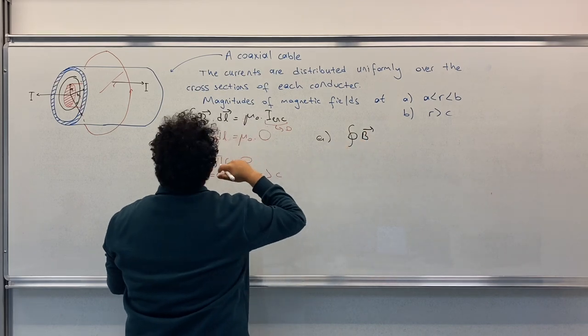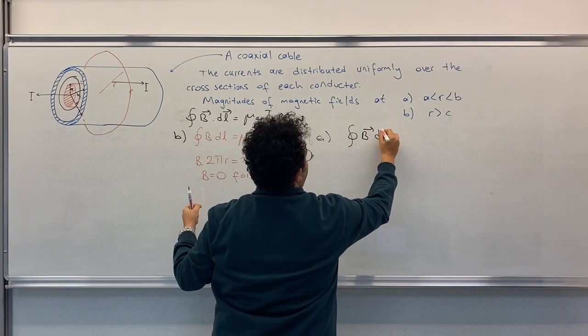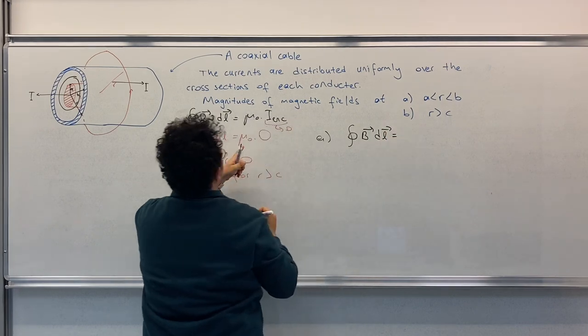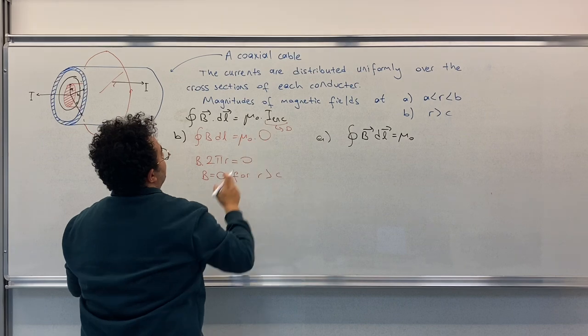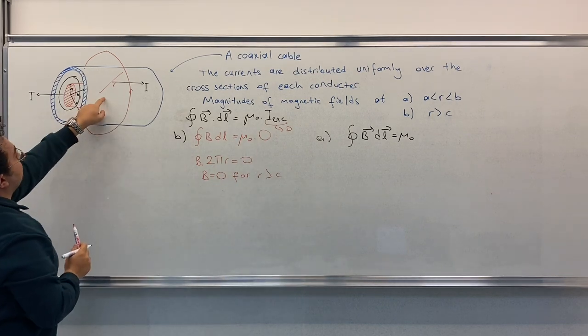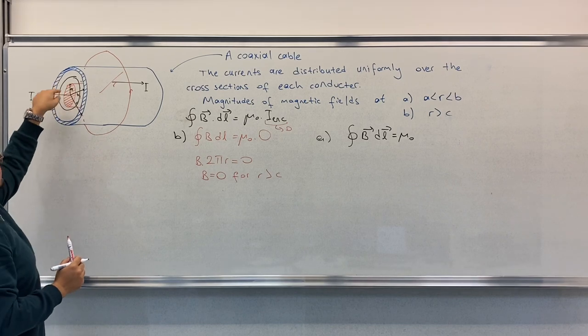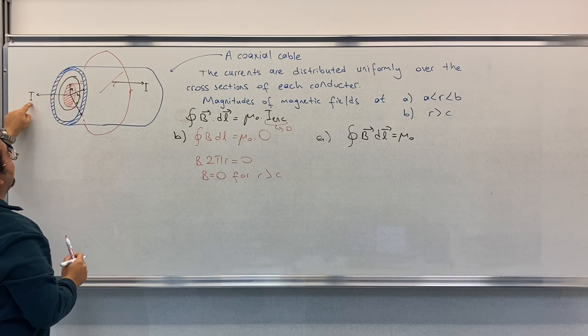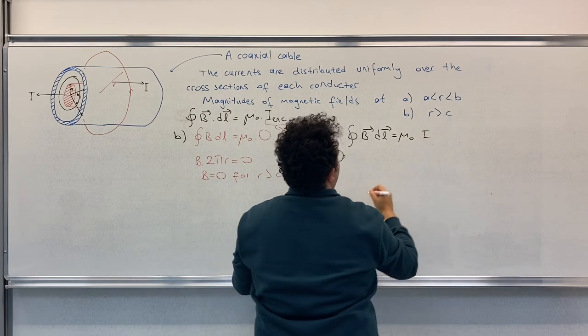Integral over closed circle B times DL equals μ₀ times I enclosed. This time, since the current to the right is not inside the surface, all we have is I.